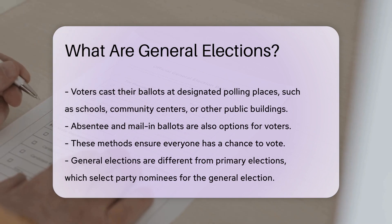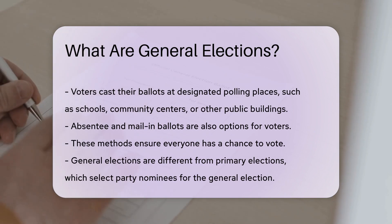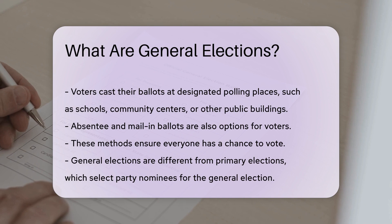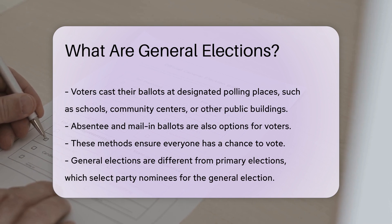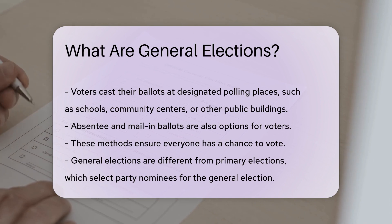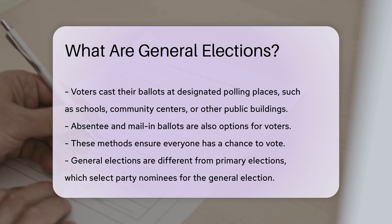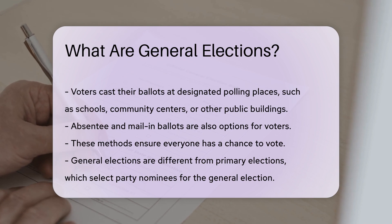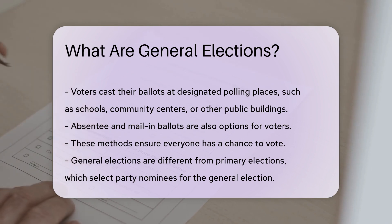Absentee and mail-in ballots are also options for voters. These methods ensure everyone has a chance to vote. General elections are different from primary elections — primaries select party nominees for the general election, which is the final step in the electoral process.